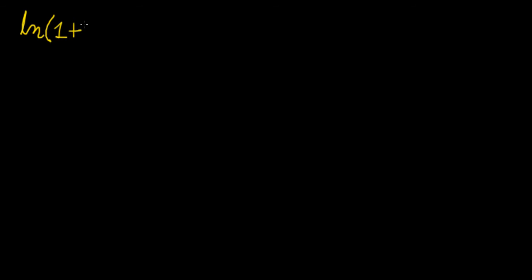Let's say we want to evaluate the complex number natural log of ln(1 + i). There are different ways you can do this — you can expand this using a Taylor series — but the method I'm going to show you today is basic algebraic manipulation. We want to know what this number is in terms of a complex number, so it's going to have a real part and an imaginary part, because it's a function of a complex number.